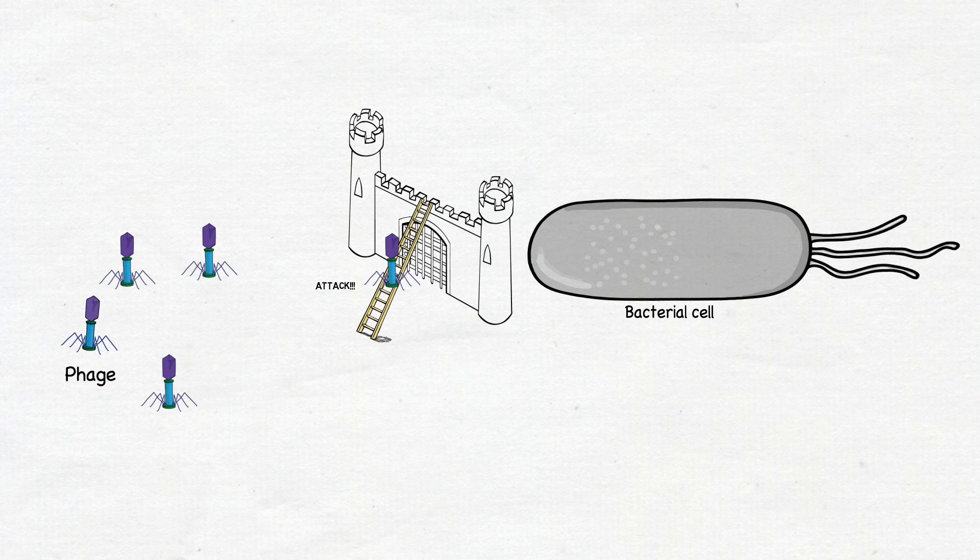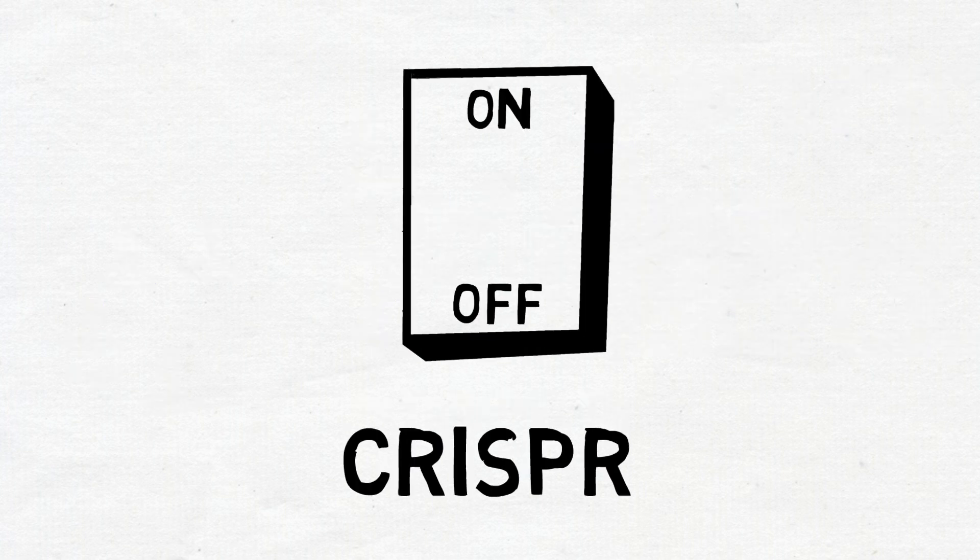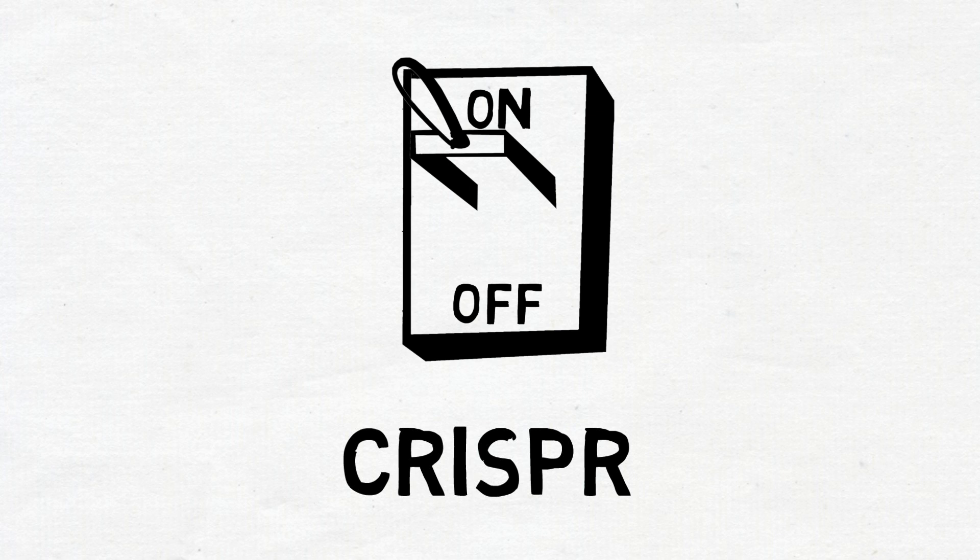In summary, by studying how phages outwit the CRISPR-Cas bacterial immune system, we were able to identify novel off switches that can be used in gene editing. Their potential applications in medicine, agriculture, biotechnology, and basic research are limitless.